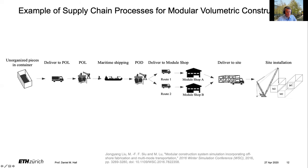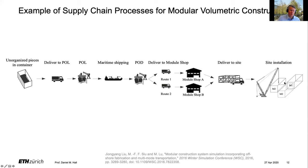Here's one example of a supply chain process for modular volumetric construction. They modeled unorganized pieces that had to go through delivery to ports, get loaded onto boats, go through shipping — this would be an international supply chain — then delivered to a module shop where modules are assembled, then the modules go onto a truck, and a crane installs the modules on site. There are many different configurations, and you will have to think about what your own supply chain processes look like — who is touching what material and when.